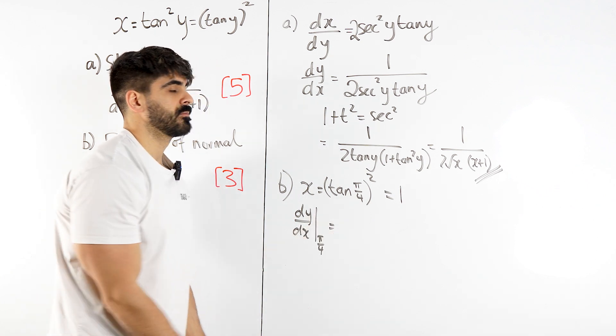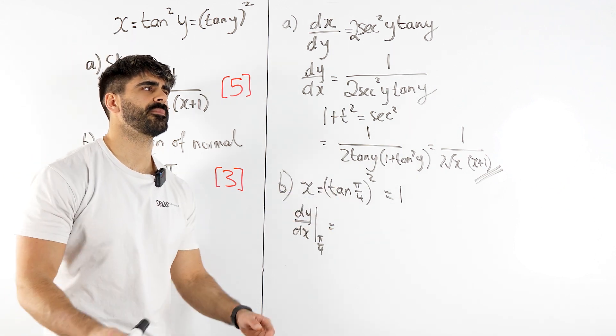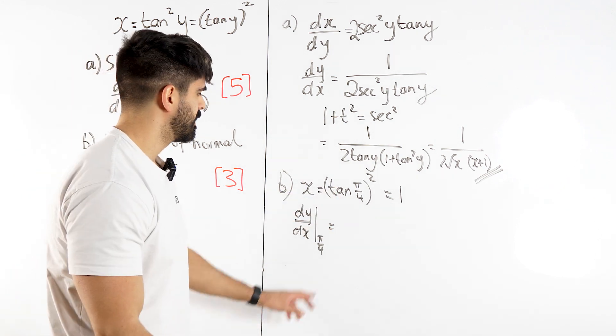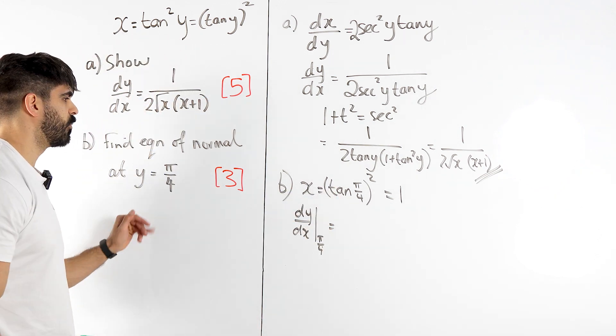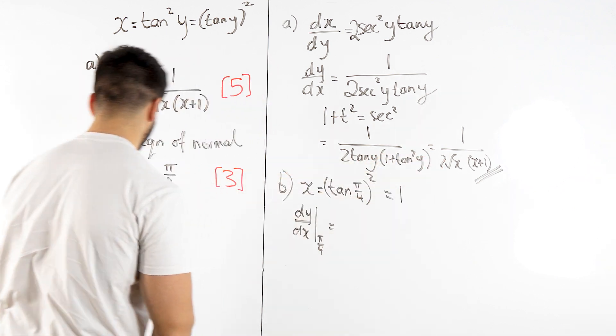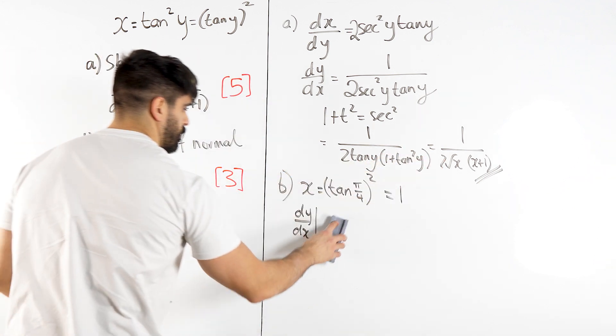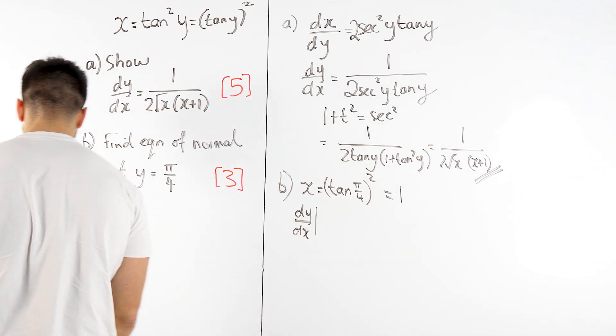However, what mistake am I about to make here is I'm subbing in pi over 4 for y when it's in terms of x. And there's another reason why we should have worked out x first. Yes we're actually subbing in 1.